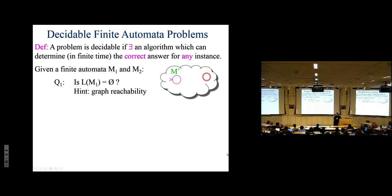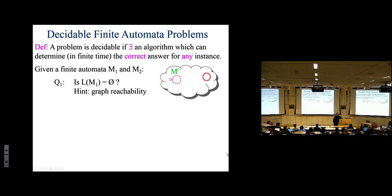Algorithmically, you recursively expand out from the initial state, following every possible hop and marking nodes you've visited. When you reach a node you've visited before, don't expand from there again. This technique is breadth-first search or depth-first search — either one works.